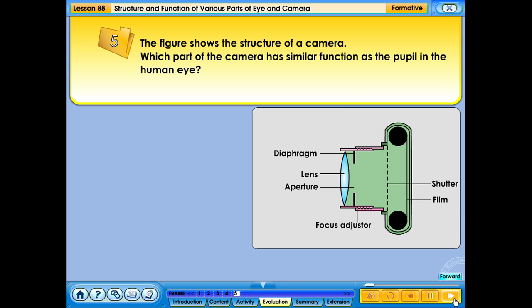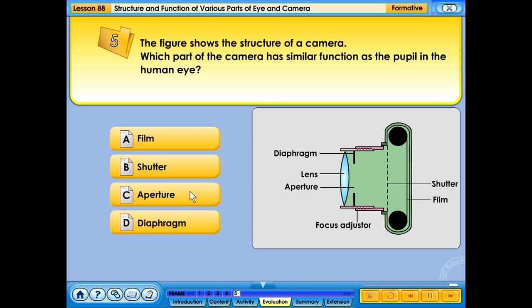The figure shows the structure of a camera. Which part of the camera has similar function as the pupil in a human eye? A. Film. B. Shutter. C. Aperture. D. Diaphragm. Your answer is correct.